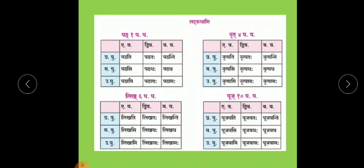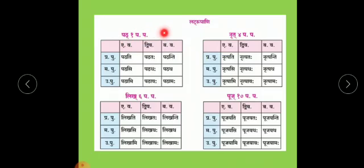On page number 16 of your textbook, the Latrupani — forms of Parasmaipat of Vartamankal (present tense) — for the first, fourth, sixth, and tenth conjugations are given. Patha Dhatu, first conjugation, Parasmaipat; Nrut Dhatu, fourth conjugation, Parasmaipat; Likha Dhatu, sixth conjugation, Parasmaipat; Pooja Dhatu, tenth conjugation, Parasmaipat — all these forms are given in your textbook.